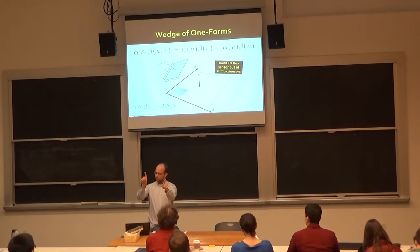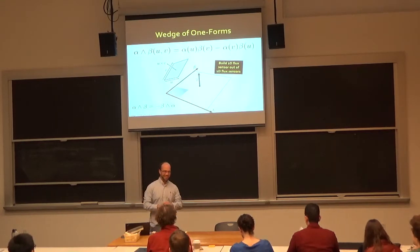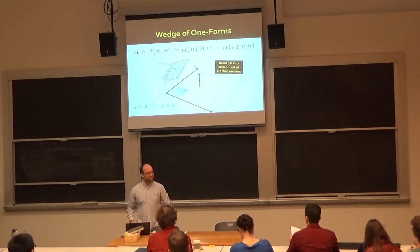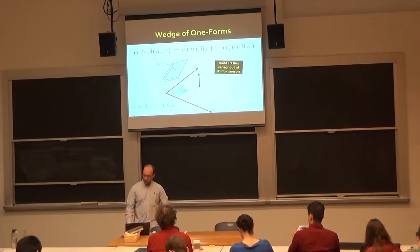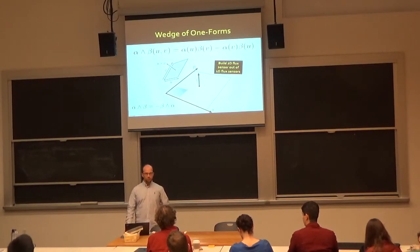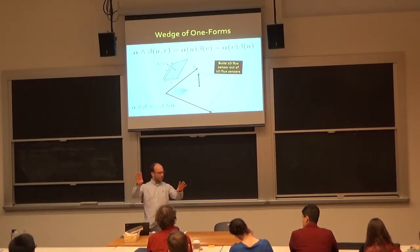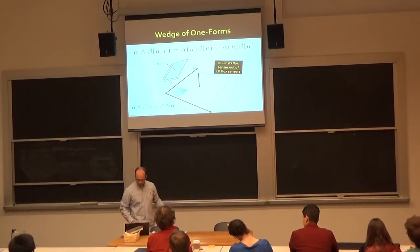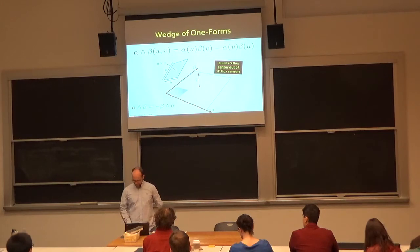If you take any two of the k inputs and swap their order, leaving everything else the same, you get the negative — that's the alternating property. This is different from a symmetric k-form. There are many ways to go from one-forms to two-forms, and it's kind of like a cross product. If you take A cross B, it equals minus B cross A. We defined the wedge product of two one-forms, which is the cross product of the one-form world.